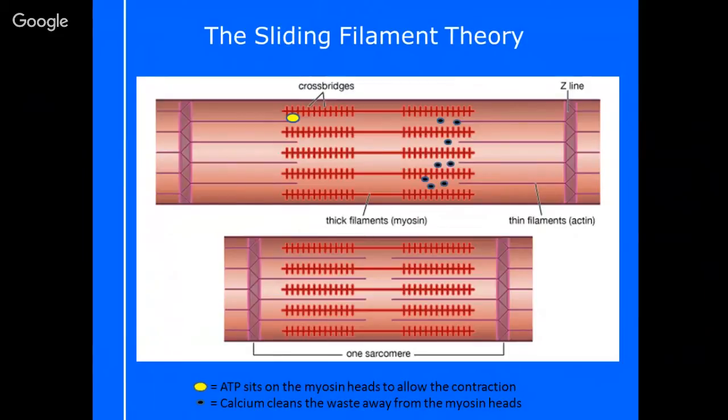A way of remembering this is the actin is thin—they both have a T in them. These basically need to join with the myosin, and the myosin is the thick filament. You can see they look kind of like brushes or caterpillars on here. These two contractile proteins join together to allow it to go from an expanded position, the accordion expanded out, down to this contracted position here, the accordion closed up.